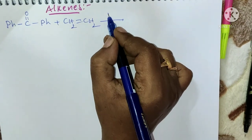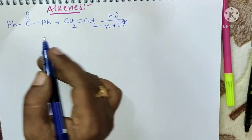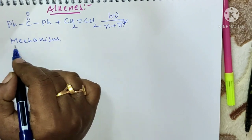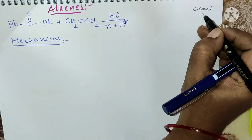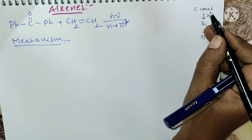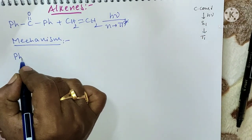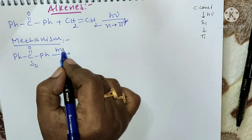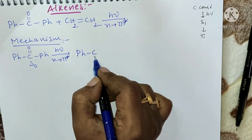Whenever benzophenone absorbs light radiation, n→π* transition takes place. The carbonyl compound — Ph-C(=O)-Ph — is in the ground state. By absorption of light radiation, n→π* transition takes place and it is converted into the singlet state, where the electrons are in anti-parallel fashion.